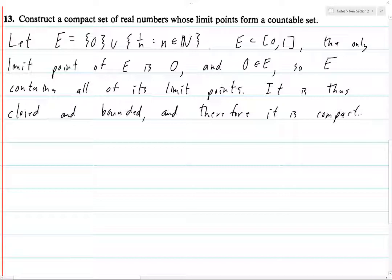The question asks to construct a compact set of real numbers whose limit points form a countable set. When we say countable, we usually mean a set which has cardinality at most that of the integers. We usually consider finite sets to be countable. So technically we could say we're done, because this set has just one limit point — a set containing one element is finite and therefore countable.